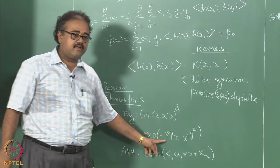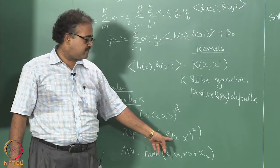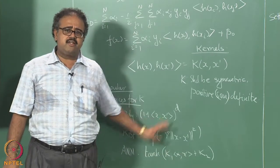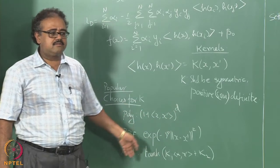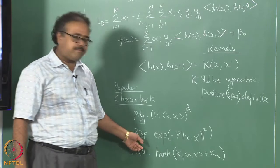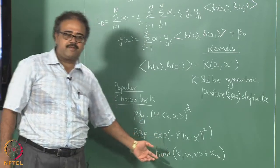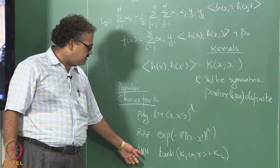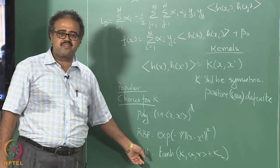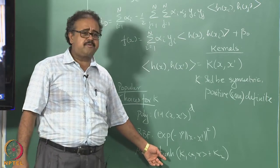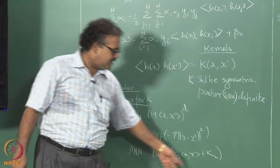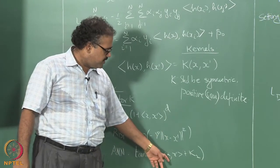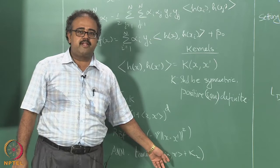The RBF kernel is given by e to the power of minus gamma times the squared norm of X minus X prime, which is essentially the Gaussian without the normalizing factor — that is why it is called the RBF kernel. If you want to call it the Gaussian kernel, you actually have to make it Gaussian; otherwise it is called the RBF kernel. Then there is the neural network kernel or sigmoidal kernel, which is just the hyperbolic tangent of kappa_1 times the inner product of X and X prime, plus kappa_2, where kappa_1 and kappa_2 are constants you tune.